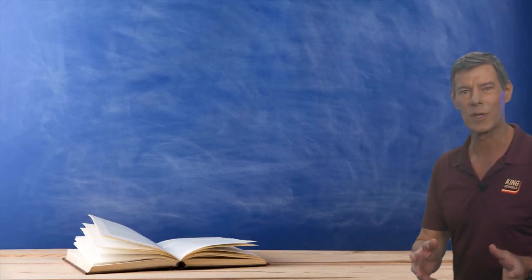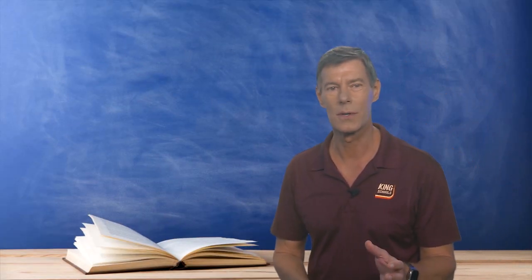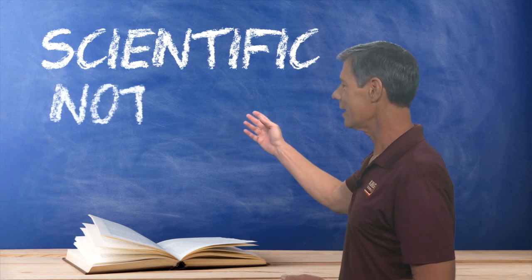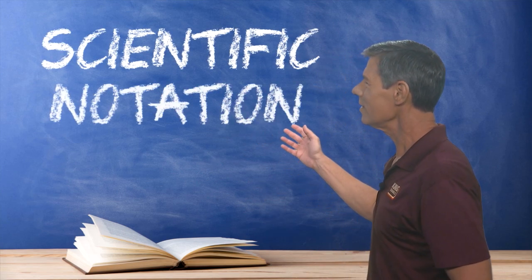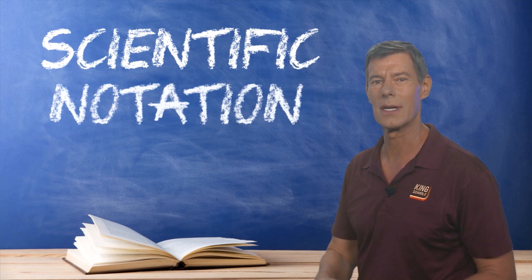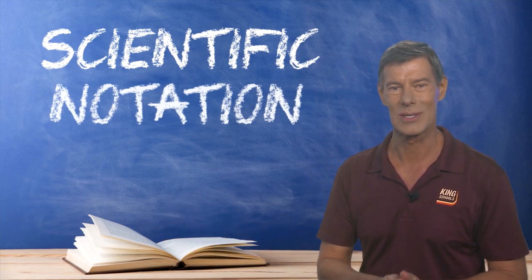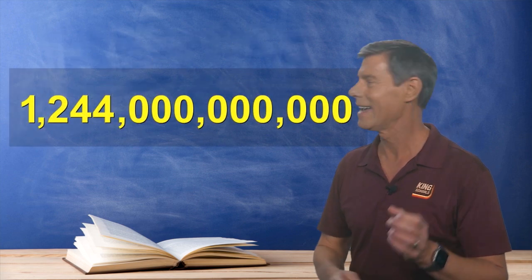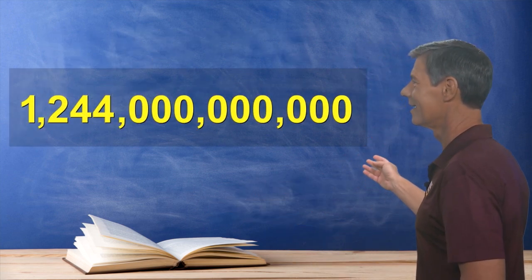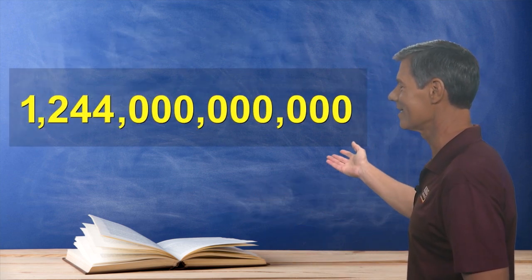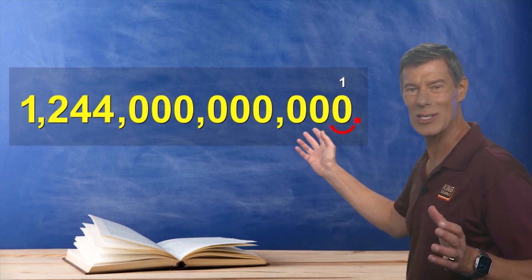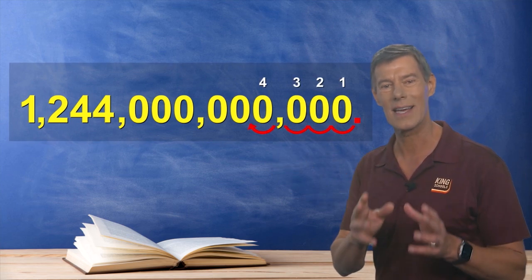Now the FAA also expects you to know how to convert numbers into something called scientific notation. Now you can think of scientific notation as a type of shorthand to express very large or very small numbers. Now let's take a look at this number right here. It's so big, I don't even know how to say it.